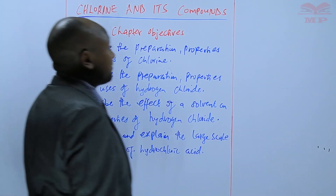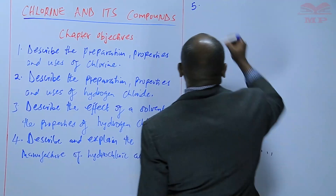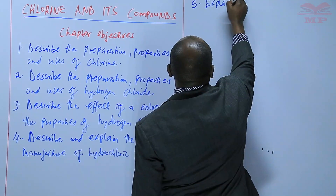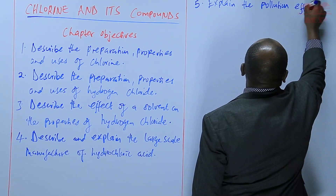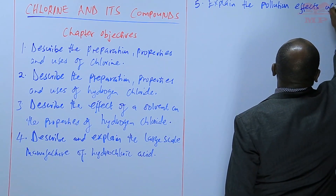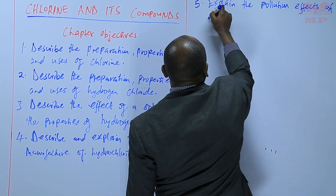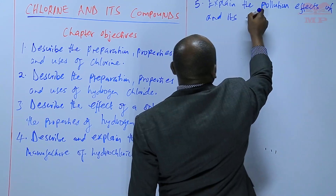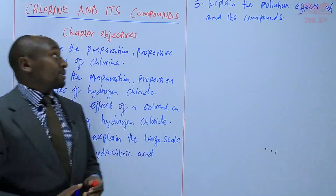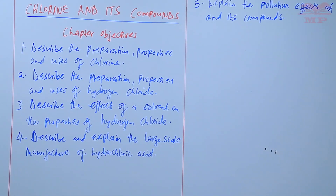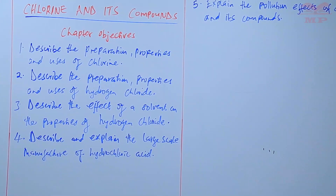And lastly, number five is to explain the pollution effects of chlorine and its compounds. So those are the objectives of this chapter. The first objective is to prepare chlorine gas, discuss its properties and uses. The second is to describe the preparation of hydrogen chloride gas, its properties and uses.